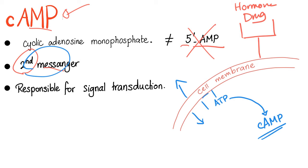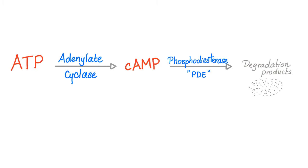If this is a heart muscle, it will increase heart rate and contractility. If this is a blood vessel, it will dilate the blood vessel. If this is a bronchus, it will dilate the bronchus. ATP, by adenylate cyclase, becomes cyclic AMP — the second messenger. Then, by an enzyme called phosphodiesterase, or PDE, it will degrade the cyclic AMP and convert it into degradation products.